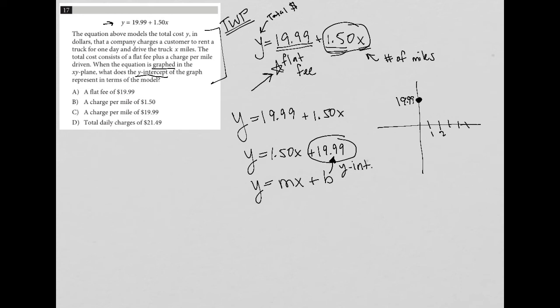So which answer choice matches this understanding? Well, choice A says a flat fee of $19.99. That is exactly what we just described—that 19.99 on the y-axis would represent a flat fee that has nothing to do with the number of miles that you drive. We can easily see that choice B is wrong.